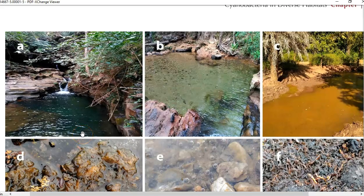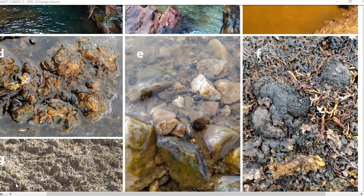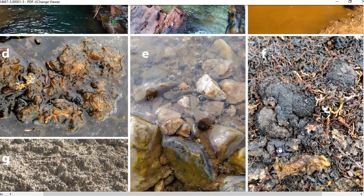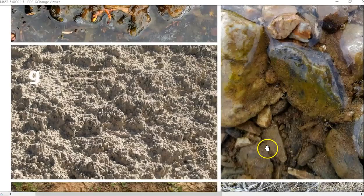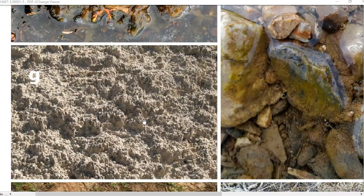Now we look at the various environments in which cyanobacteria could be present. The first image shows the presence of cyanobacteria in a small reservoir. Images B and C show the presence of cyanobacteria in certain shallow as well as stagnant freshwater bodies. Images D, E and F show cyanobacteria in freshwater in the Arctic regions of the world. Image G refers to soil crust formed with the help of cyanobacteria, recorded in the Utah region of the U.S.